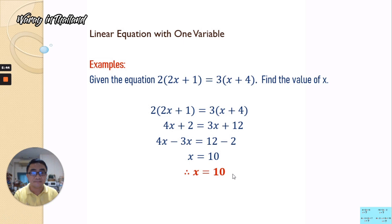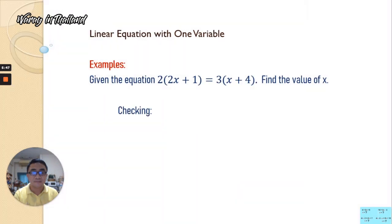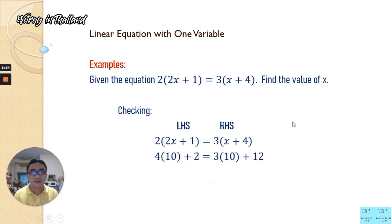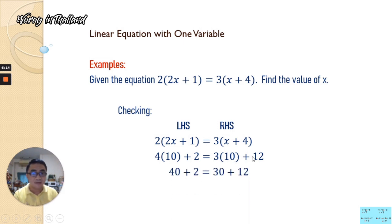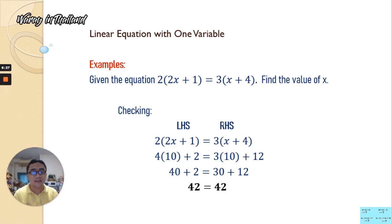We check whether our answer is correct by substituting x equals 10 into the equation. We have 4 times 10 plus 2, which gives 40 plus 2; and 3 times 10 plus 12, which gives 30 plus 12. Combining: the left-hand side gives 42 and the right-hand side also gives 42. Both sides are equal, so therefore the value of x is confirmed to be equal to 10.